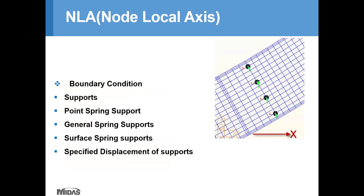Node Local Axis is used for defining boundary conditions such as support or point spring support. As shown in the curved bridge example, to obtain proper reaction along the tangential direction to the curved line and reactions in the radial direction, the Global Coordinate System cannot be used. In this case, we need to define Node Local Axis to get proper reactions in proper directions, because support axis follows the Node Local Axis.